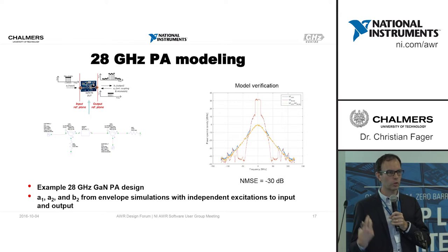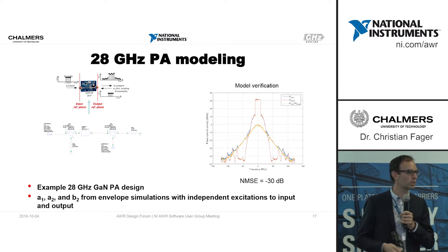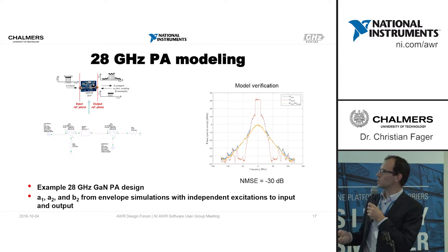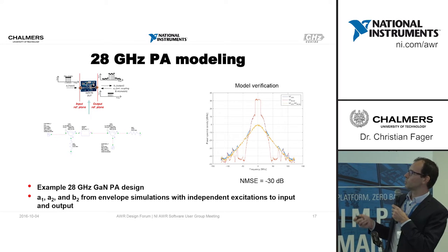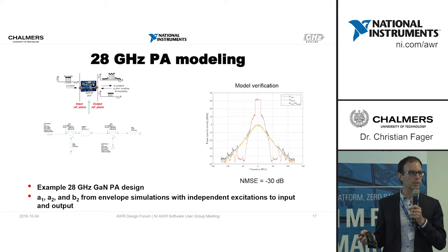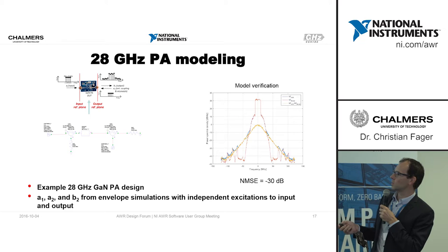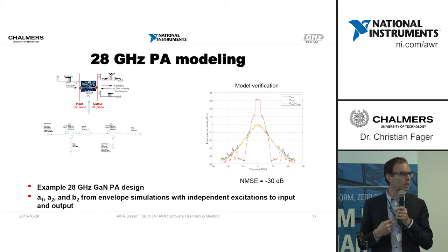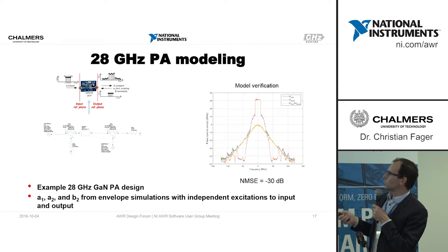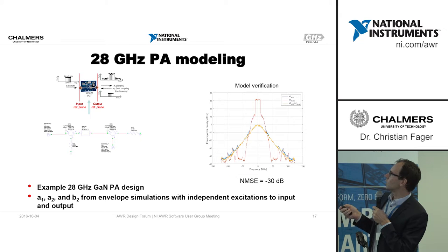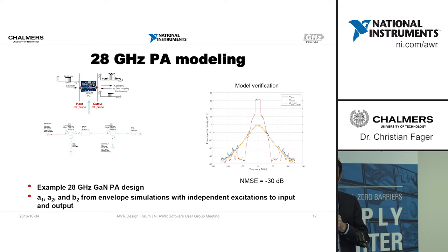Now we want to see what effect that has on the circuit and transmitter. For that we need these models — I have a 28 GHz power amplifier design, though I was not allowed to show its details. You put it into VSS or Microwave Office, extract the waves, extract the polynomial coefficients from the model I described, and then compute and compare. The model and measured spectrum overlap quite nicely.